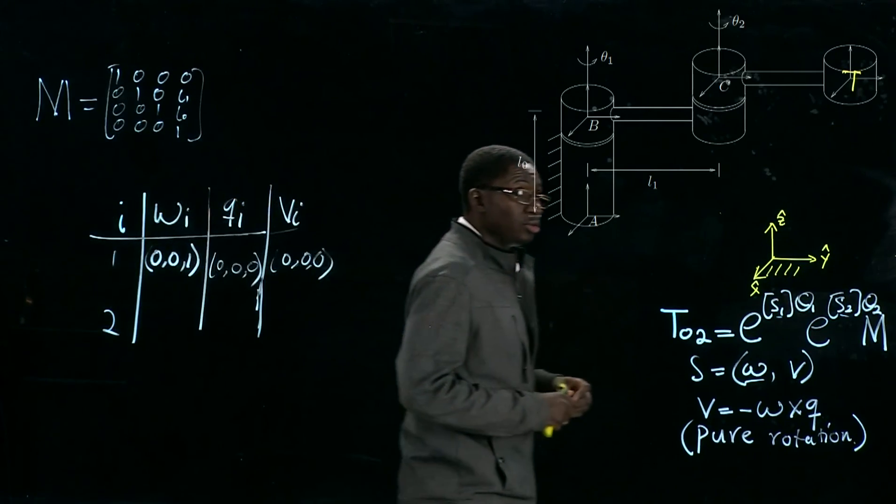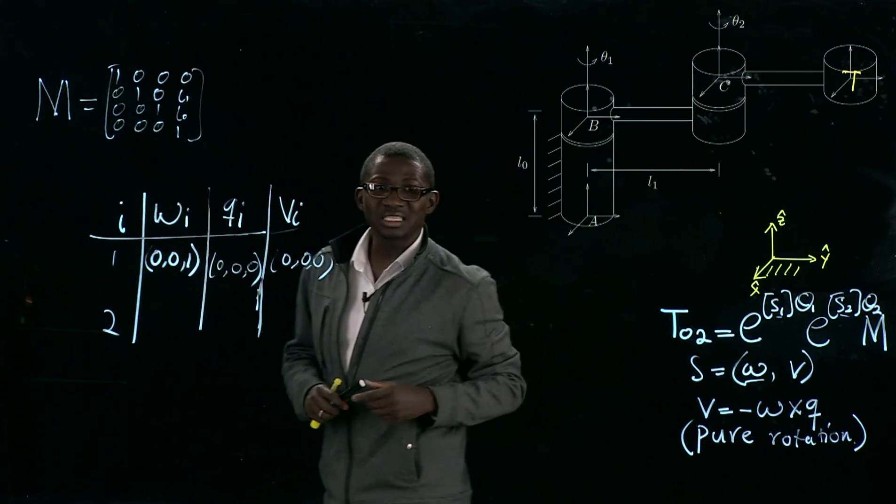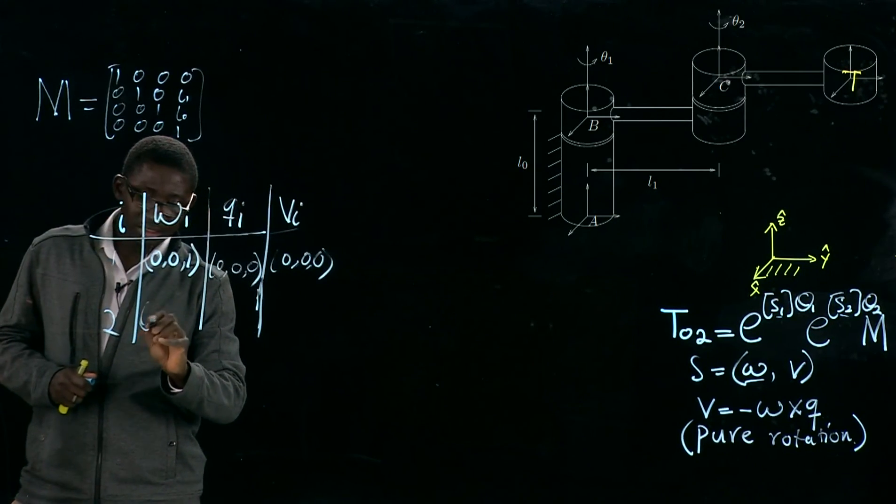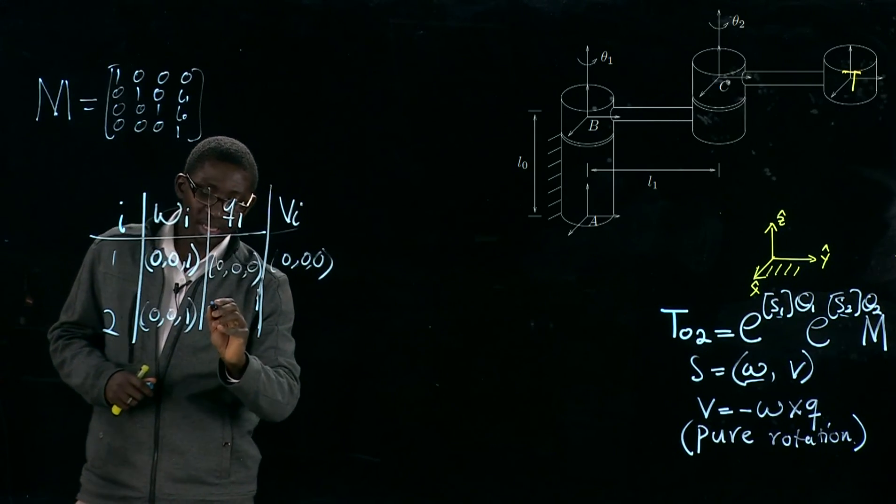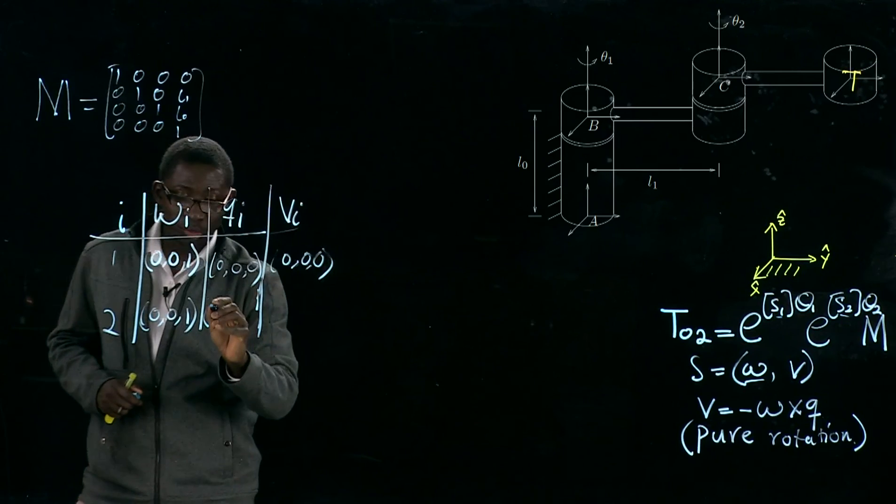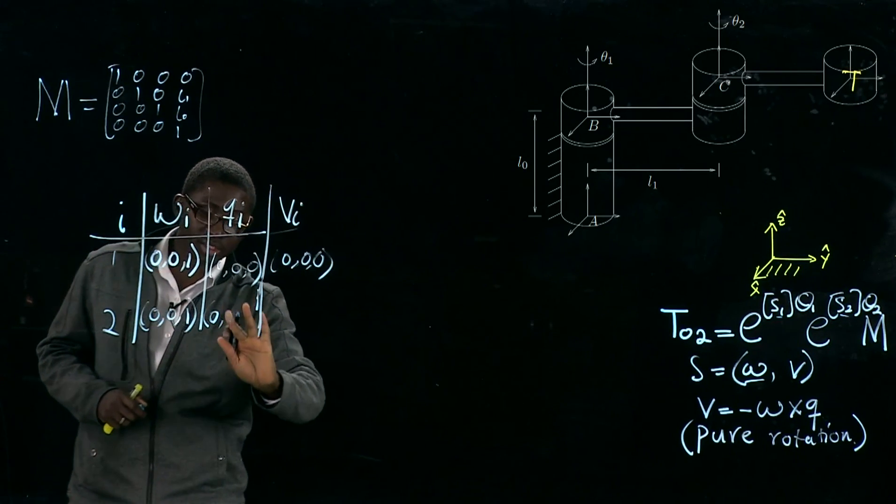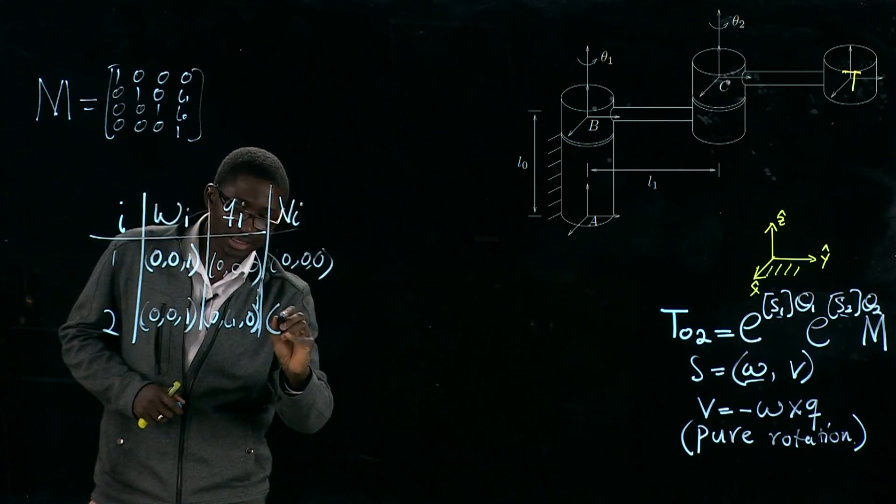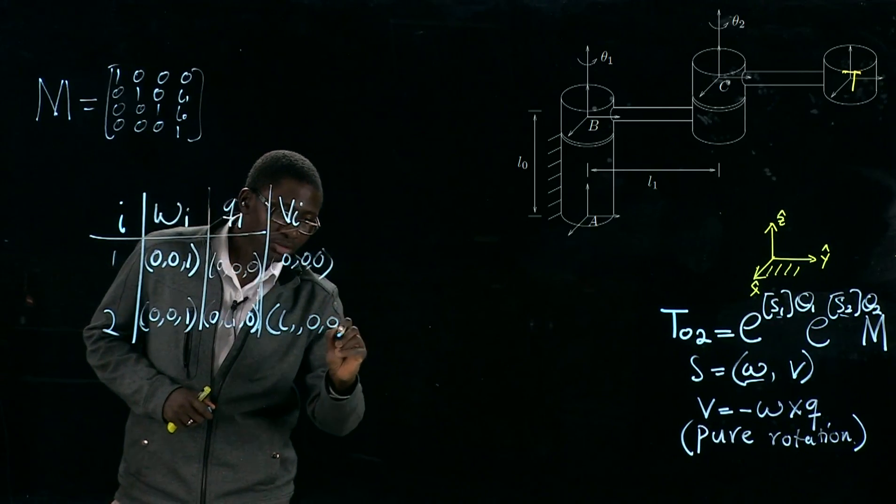Now, for our omega 2, when we fix the space frame, we are going to get [0, 0, 1] also. And our q2, I want to go with [0, L1, 0]. And that will give us [L1, 0, 0] for v2.